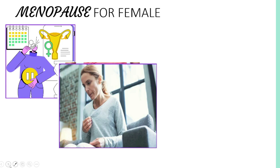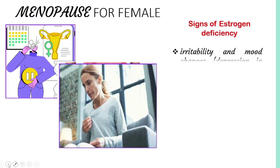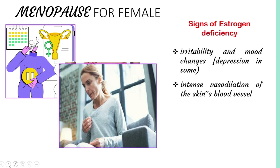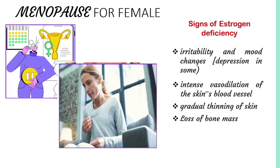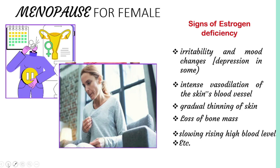These are the signs of estrogen deficiency. The first one is irritability and mood changes, which may sometimes cause depression. Second is intense vasodilation of the skin's blood vessels. Next is gradual thinning of skin. Then loss of bone mass. And then slowing and changes in blood levels, and many other symptoms depending on the woman.